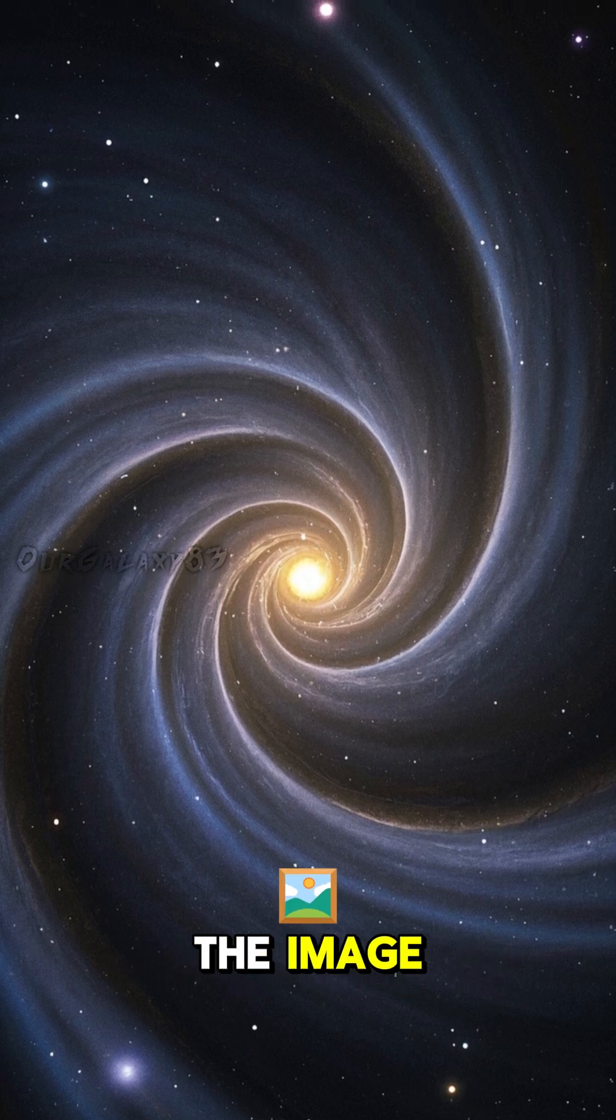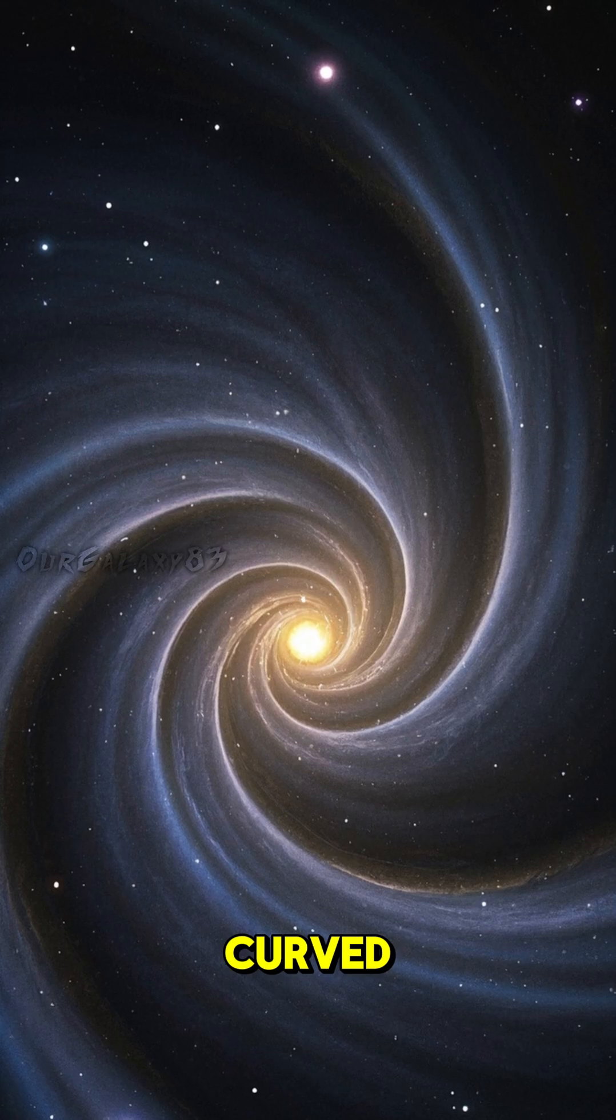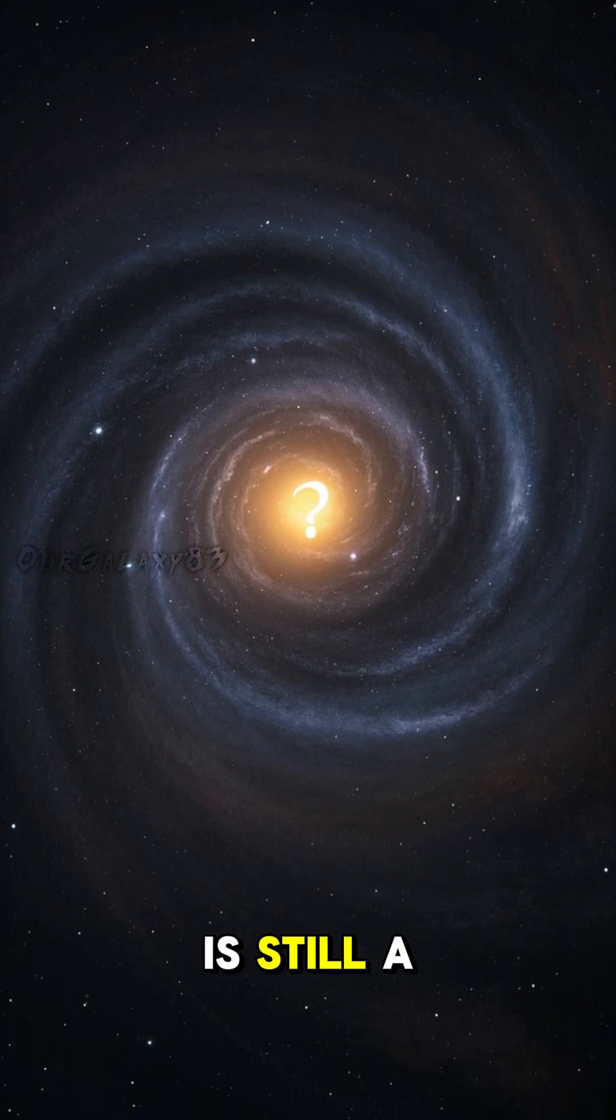And if you look closely at the image, you can see that the spiral arms are not actually straight. They're curved. And the reason for that curvature is still a mystery.